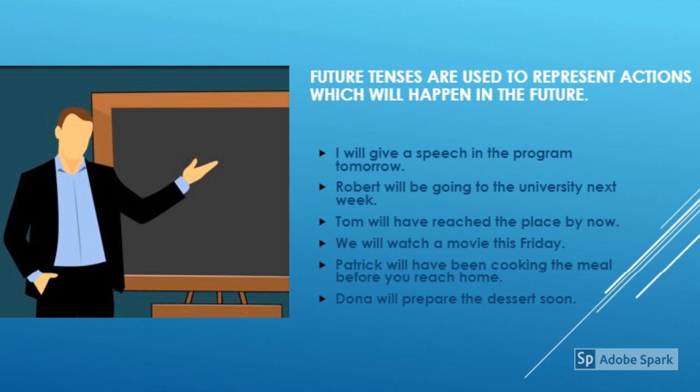Now in all these sentences, the future activities are expressed. But when you look at the sentences carefully, you can notice that different verb patterns can be seen there: will give, will be going, will have reached, will watch, will have been cooking, will prepare. So these are the structures or verb patterns that you can see in different future tenses.